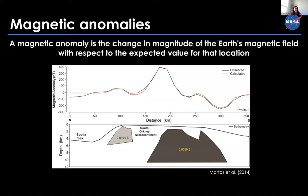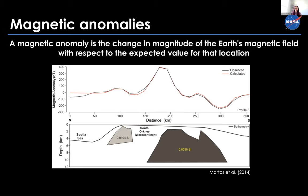We can define a magnetic anomaly as the change in magnitude of the Earth's magnetic field with respect to the expected value for a particular location. This is a 2D model of a location in the Southern Ocean. The panel at the top is the magnetic anomaly with amplitudes going from minus 300 to 400 nanoteslas. These wiggles are telling us something buried beneath the surface — contrasts in magnetic properties within the crust. In the model, we identify two blocks with different magnetic susceptibility representing continental blocks — it's a contrast in magnetization, not absolute values.